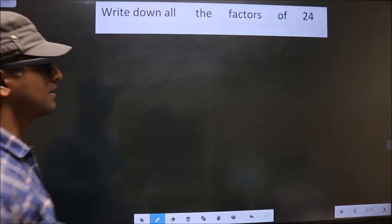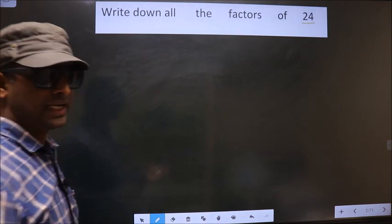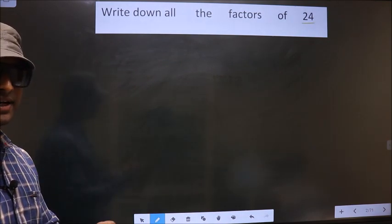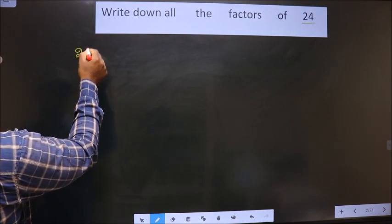Write down all the factors of 24. To write all the factors of 24, first we should do the prime factorization of it. That is... 24.